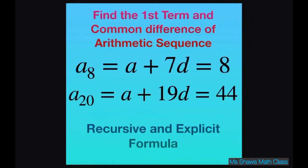Hi everyone, we're going to find the first term and the common difference of an arithmetic sequence giving certain information. We're also going to find the recursive and explicit formula or the nth term. The nth term is the explicit formula.